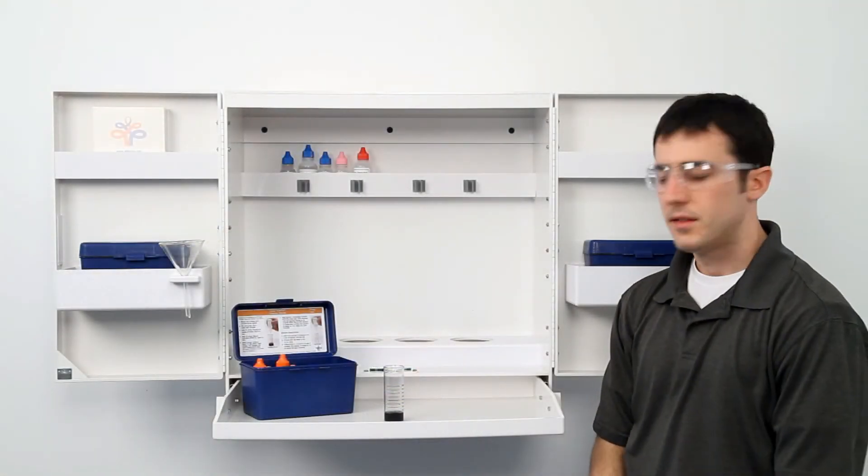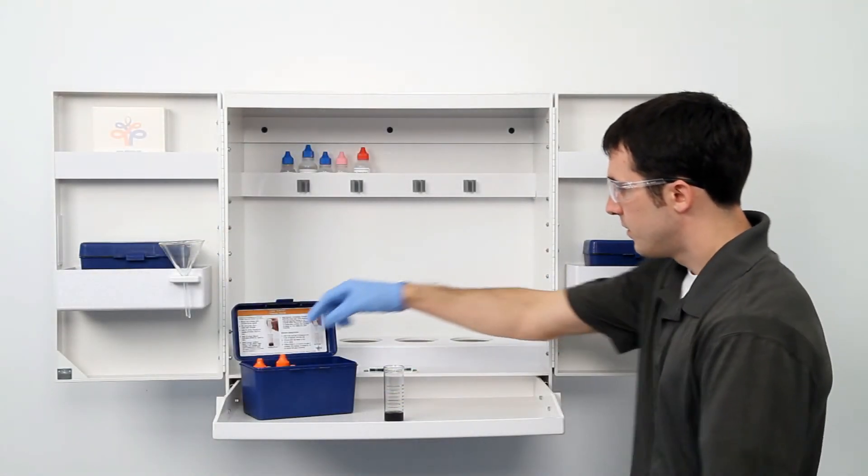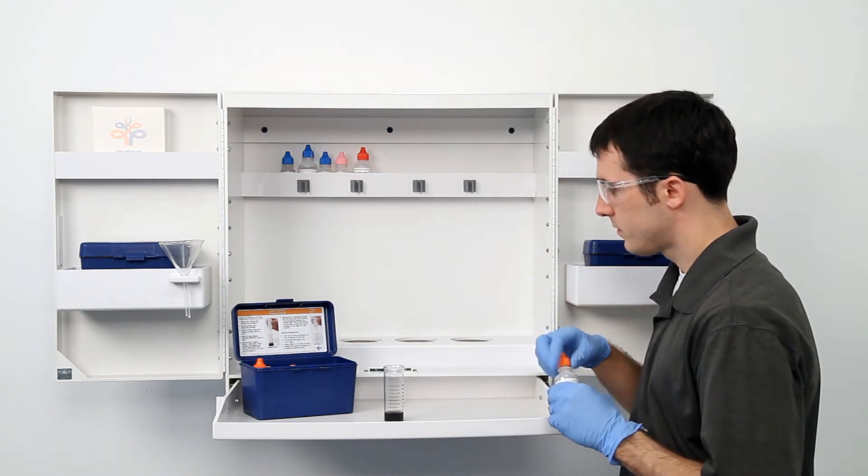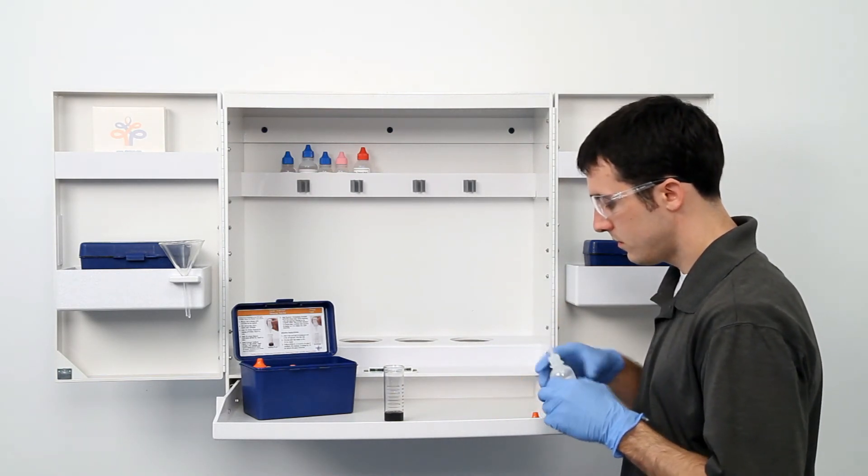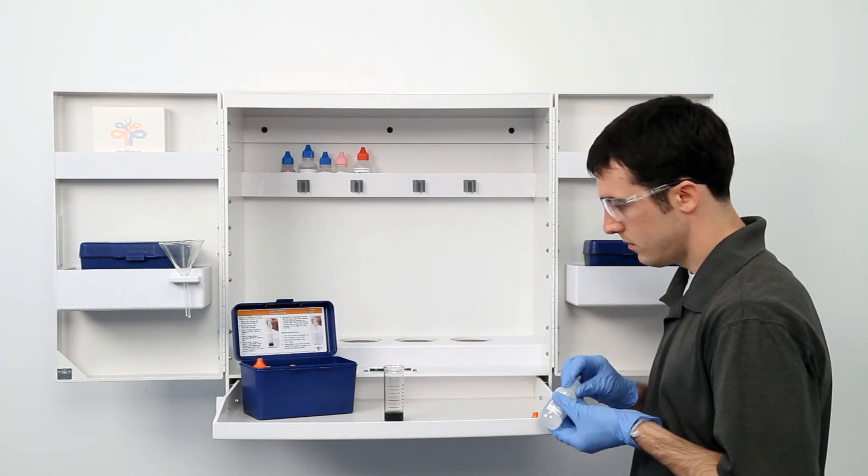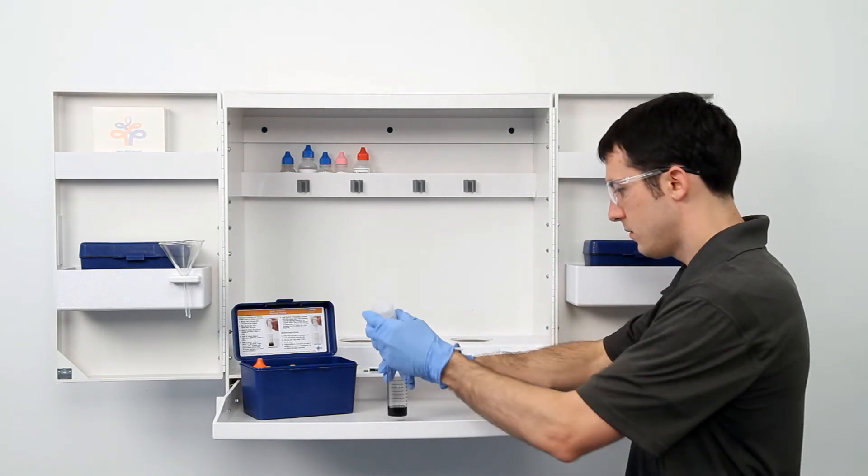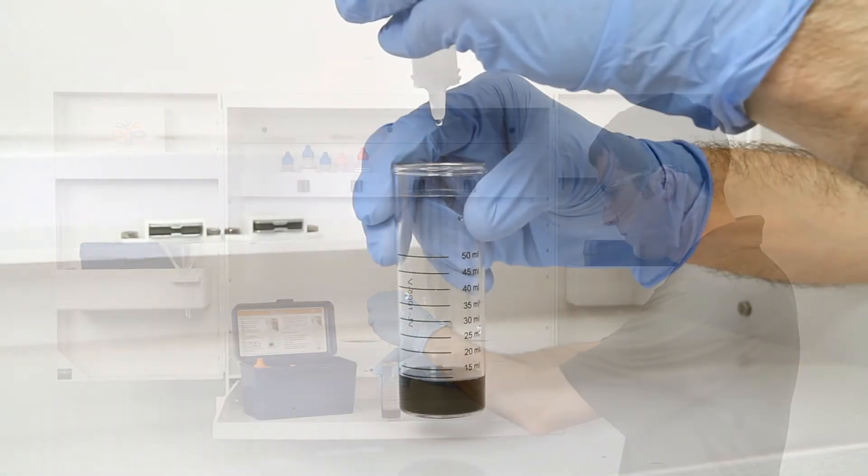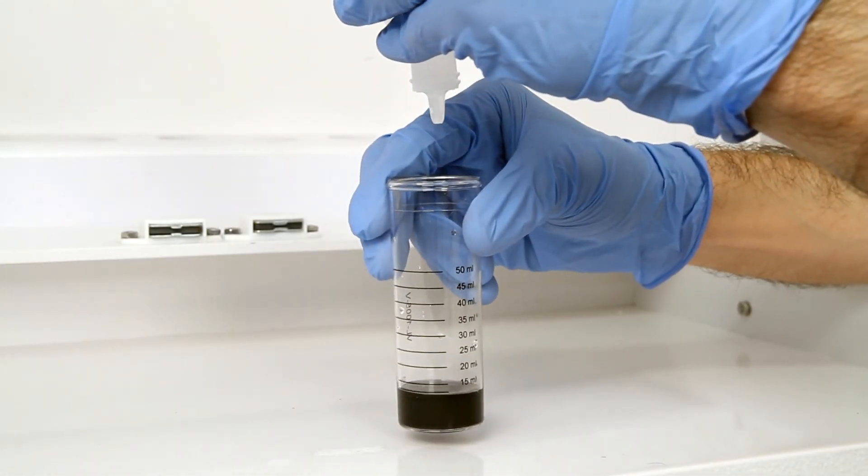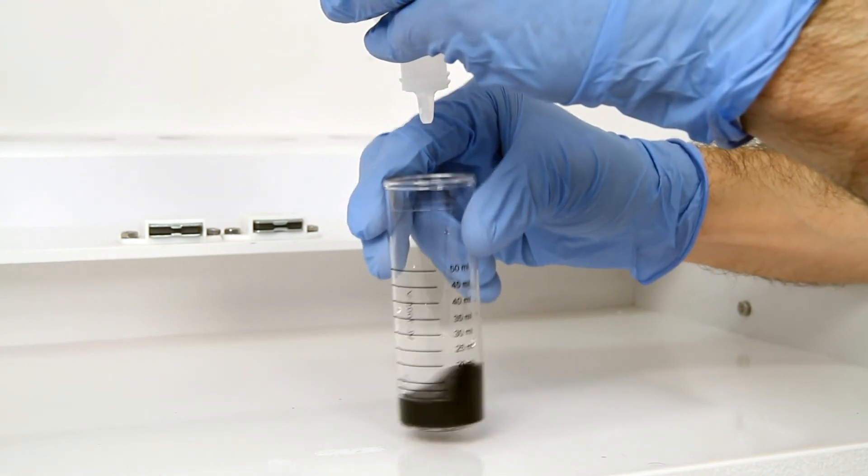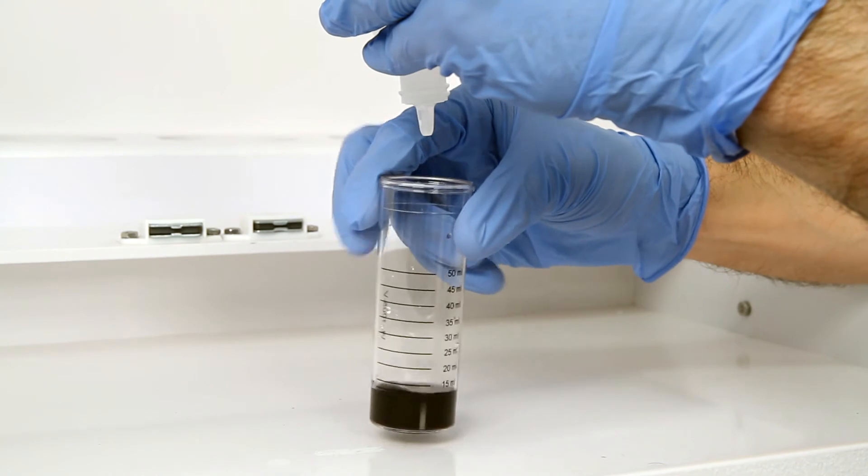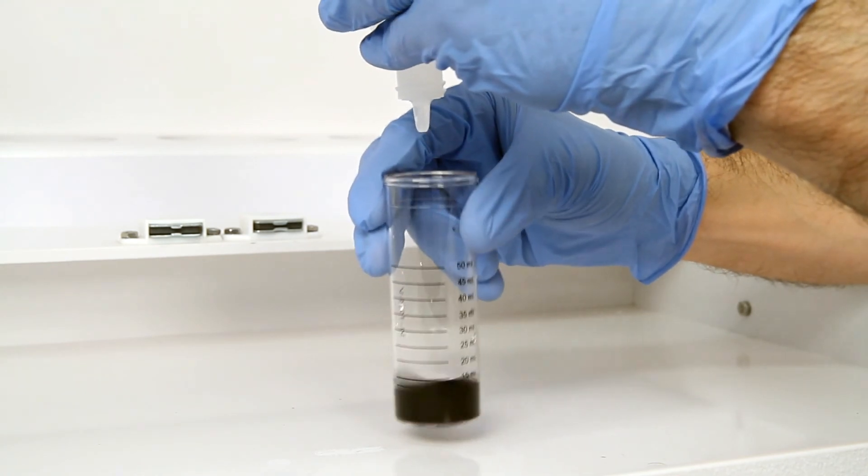The next step is to perform the titration. It's important to make sure you have the proper titrant and the proper sample size for this titration. You will use sodium thiosulfate titrant. The bottle contains a dropper tip, so it's important to hold the bottle vertically to make sure you get a consistent drop size. After the addition of each drop of titrant, swirl the vial to make sure the sample is properly mixed. Count the number of drops during this step.